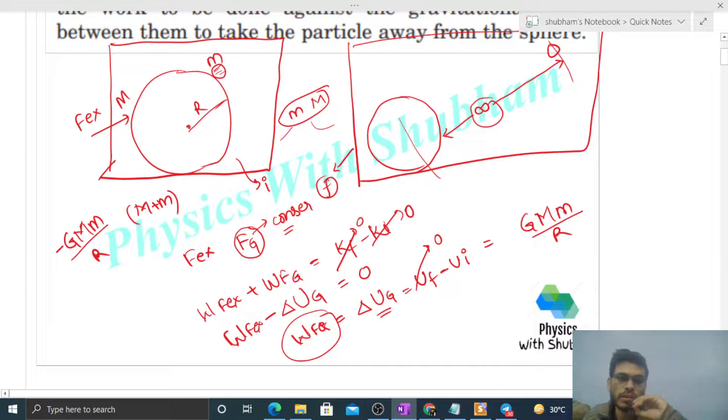Just put the values: 6.67 into 10 raised to the power minus 11, capital M will be 10 kg, small m will be 0.1 kg, and capital R will be 0.1 meter.